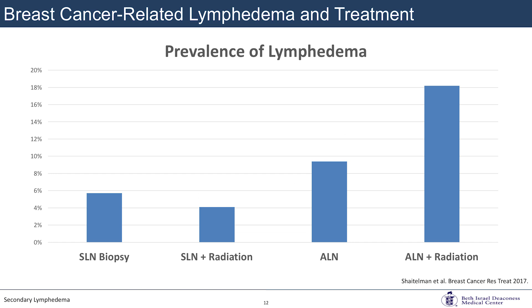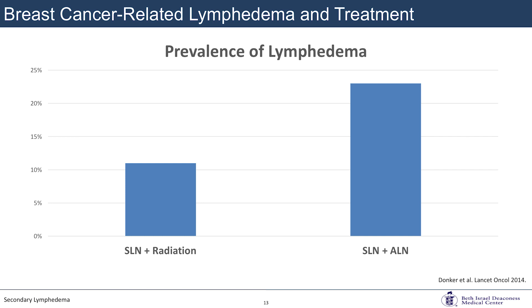Regarding radiation therapy: in patients who received only a sentinel lymph node biopsy, this meta-analysis found that adding radiation didn't play a huge role in worsening lymphedema. However, in those who had a full axillary lymph node dissection, adding radiation caused the risk of lymphedema to jump up significantly. A randomized controlled trial comparing sentinel lymph node biopsy plus radiation versus sentinel lymph node biopsy with subsequent axillary dissection if positive showed that, although radiation is not good for the lymphatics, it may be better than performing a concomitant axillary lymph node dissection.